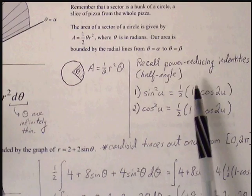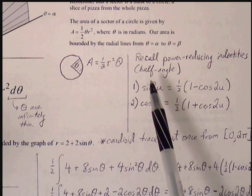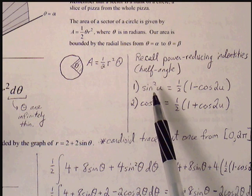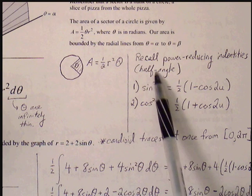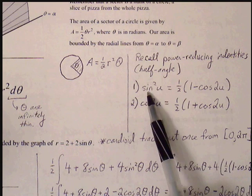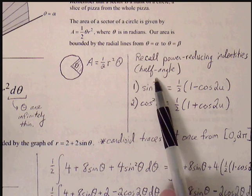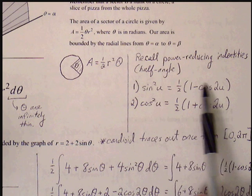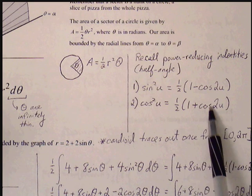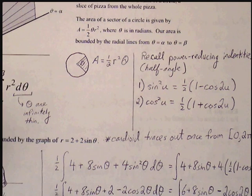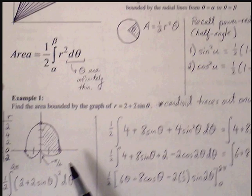We'll also need to recall the power reducing or half-angle identities. We're going to need these when we find the integral, as they will show up when we have squared trig functions. Basically, we'll use these identities to eliminate exponents of 2 so that we can integrate our problem. We'll come back to this when we need it.